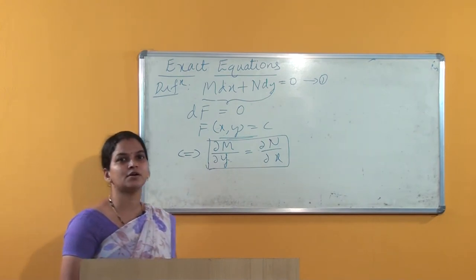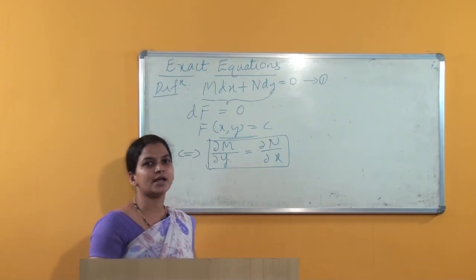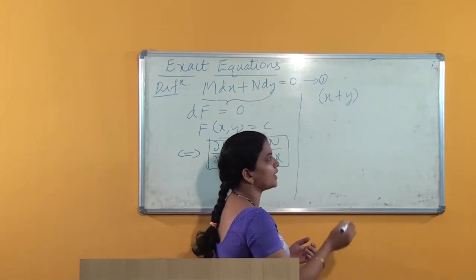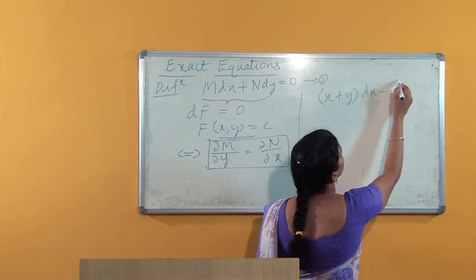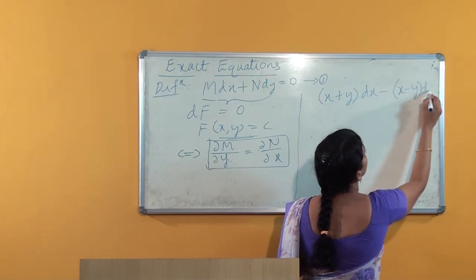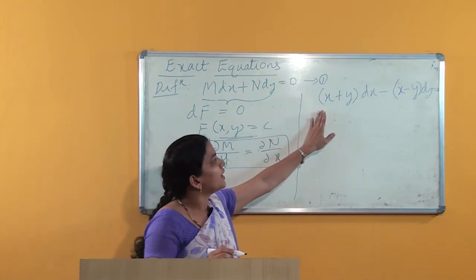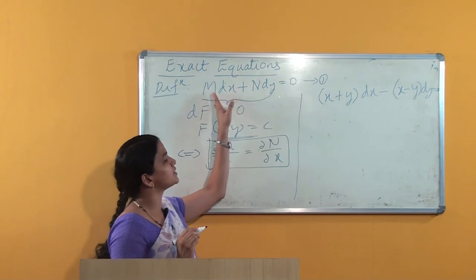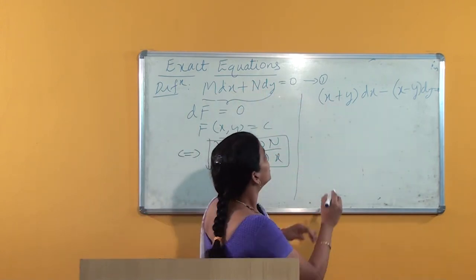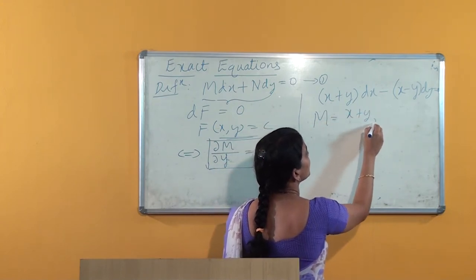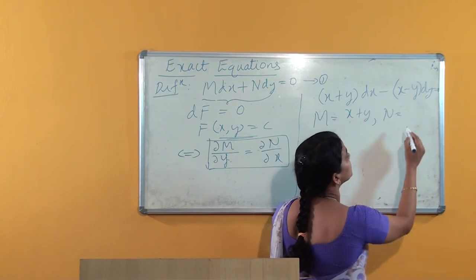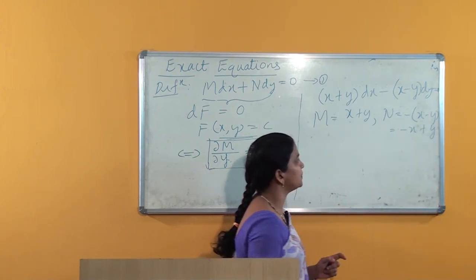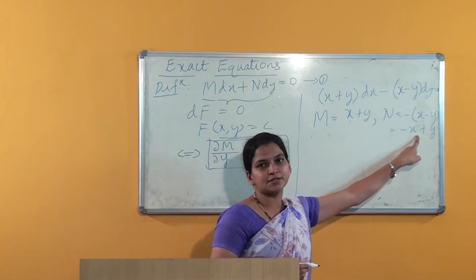Let us see some examples of how to check whether a given differential equation is exact or not. Take the equation (x + y)dx − (x − y)dy = 0. Comparing with Mdx + Ndy = 0, we identify M = x + y. Since we have a minus sign, N = −(x − y) = −x + y.